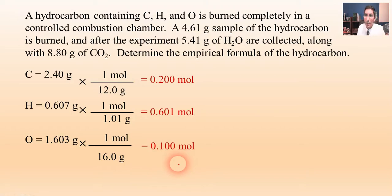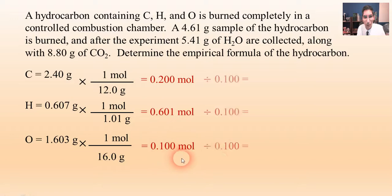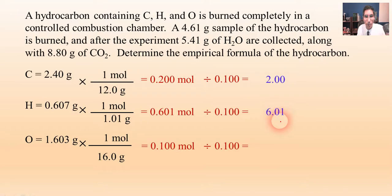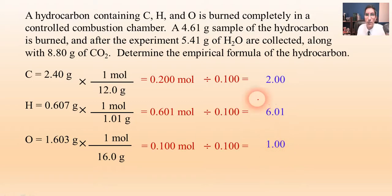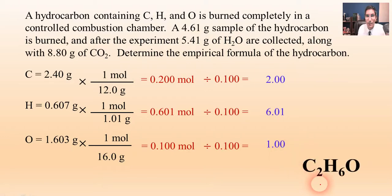The next step is to divide all three mole values by the smallest, which is 0.100 moles. Dividing gives us 2 for carbon, 6.01 (very close to 6) for hydrogen, and 1 for oxygen. Those are the subscripts. So the empirical formula is C2H6O.